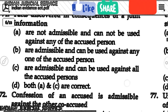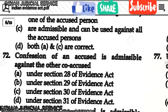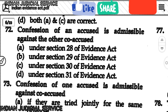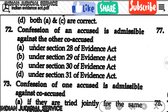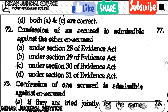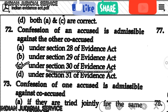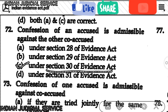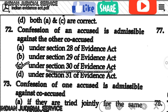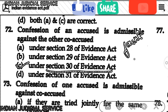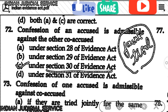Question number 72: Is a confession of one accused admissible against a co-accused? The answer is option C — under Section 30 of the Indian Evidence Act. Section 30 provides for consideration of a proved confession affecting the person making it and others jointly tried for the same offence. This section is important because it covers joint trial provisions.